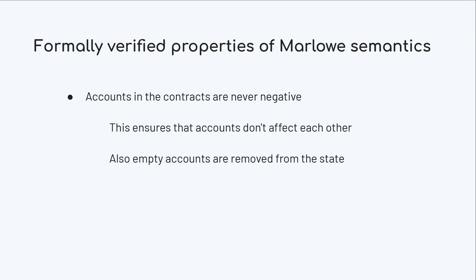Also, accounts in the state of a contract are never negative. This ensures that the accounts don't affect each other. As mentioned before, if there is not enough money to pay from the account you are trying to pay, then we pay just the amount that is in the account.